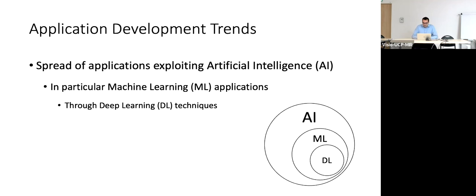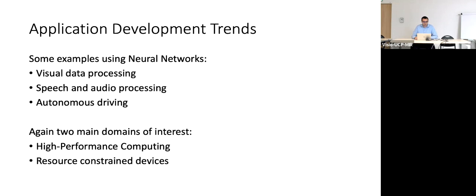For applications, consider that at the beginning I mentioned increasing demand for computing resources and computing-intensive applications. This is also due to the spread of artificial intelligence applications, particularly those that exploit machine learning through deep learning techniques. Artificial intelligence is a set of techniques that let machines mimic human behavior; with machine learning, machines improve their results through experience; with deep learning, we manage machine learning for very specific cases through neural networks.